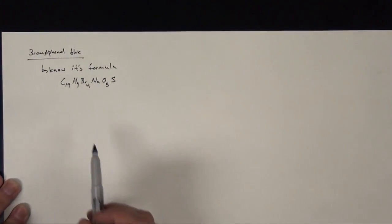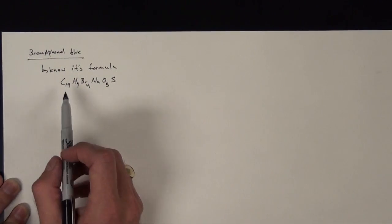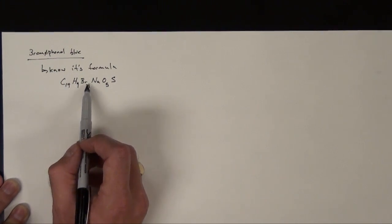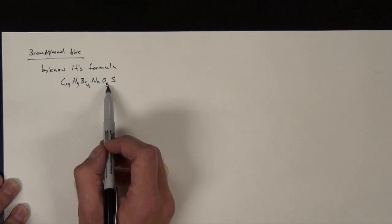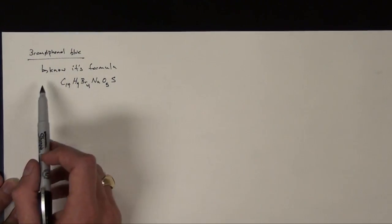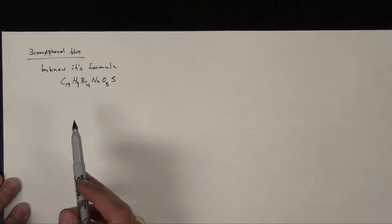So this is telling me I have, in this one molecule of Bromophenol Blue, 19 carbon atoms, 9 hydrogen atoms, 4 bromine atoms, 1 sodium atom, 5 oxygen atoms, and 1 sulfur atom. So now I know the chemical constituents of this formula, and so I can calculate its formula weight.